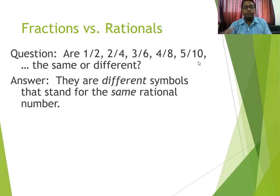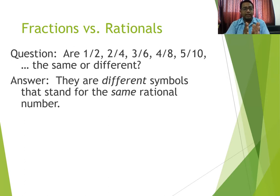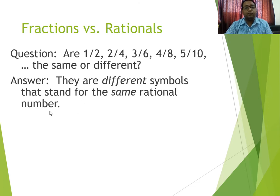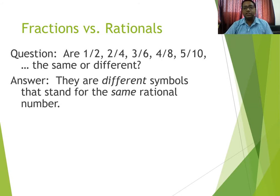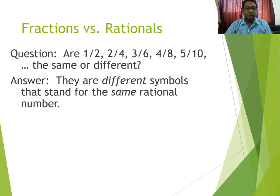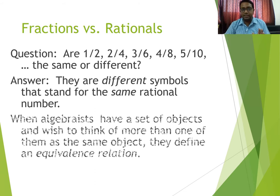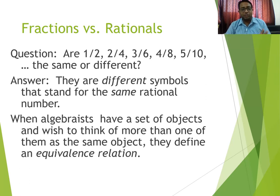Hum unke upar ek relation define karenge, aur us relation ko hum verify karenge ki woh equivalence relation hai ya nahi. Agar woh equivalence relation hua, toh woh us set mein se woh chizein nikal ke de dega jo ek hi tarah ke number ko represent kar rahi hain. Toh iska answer yeh raha: there are different symbols that stand for the same rational number. Symbols toh different the, lekin jab humne woh divisibility wala relation bataya, toh uski wajah se yeh sare ke sare same rational number huay. Toh equivalence relation hume yeh kaam karke dega — jo number same honge unko ek taraf nikal dega, aur jo different honge unko doosri taraf nikal dega.